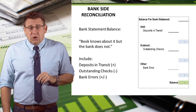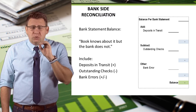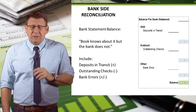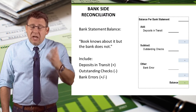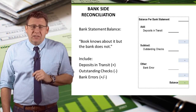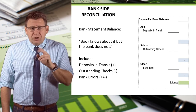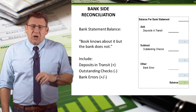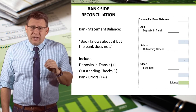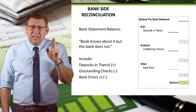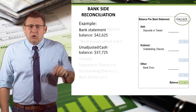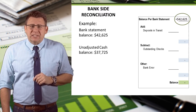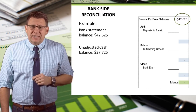The focus of this video will be how to reconcile the bank statement balance. To determine if something reconciles the bank side, I often think of it in these terms: it's stuff the book knows about, but the bank does not. The three most common items are deposits in transit, outstanding checks, and bank errors. Let's enter the bank statement balance into our bank side reconciliation form.